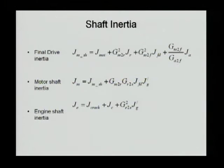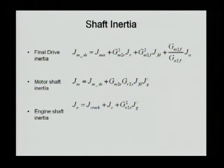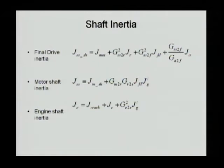The shaft inertia is at the motor, and the ring gear inertia is transferred through a gear ratio. The final drive and the axle — you add them together and you get the inertia of the motor shaft.